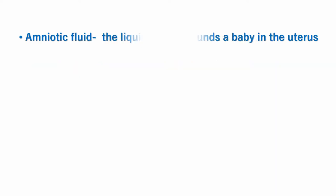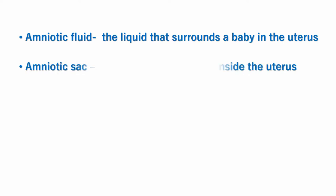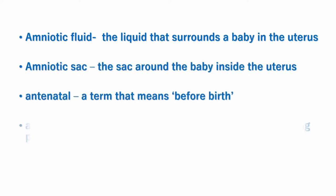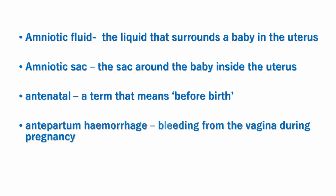Amniotic fluid: a liquid that surrounds a baby inside the uterus, produced as a protective liquid by the amniotic sac. Antenatal means before birth. Antepartum hemorrhage is bleeding from the vagina before delivery.